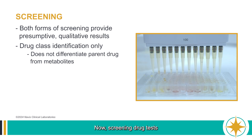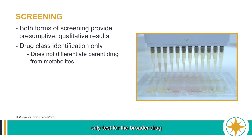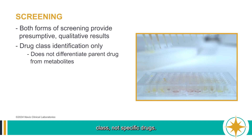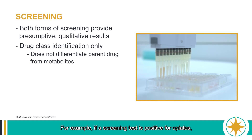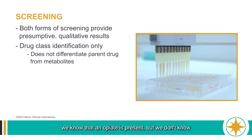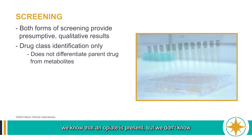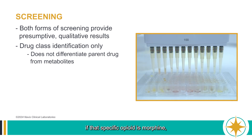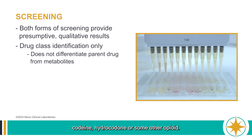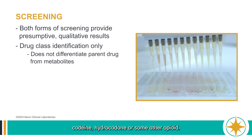Screening drug tests only test for the broader drug class, not specific drugs. For example, if a screening test is positive for opiates, we know that an opiate is present, but we don't know if that specific opioid is morphine, codeine, hydrocodone, or some other opioid.